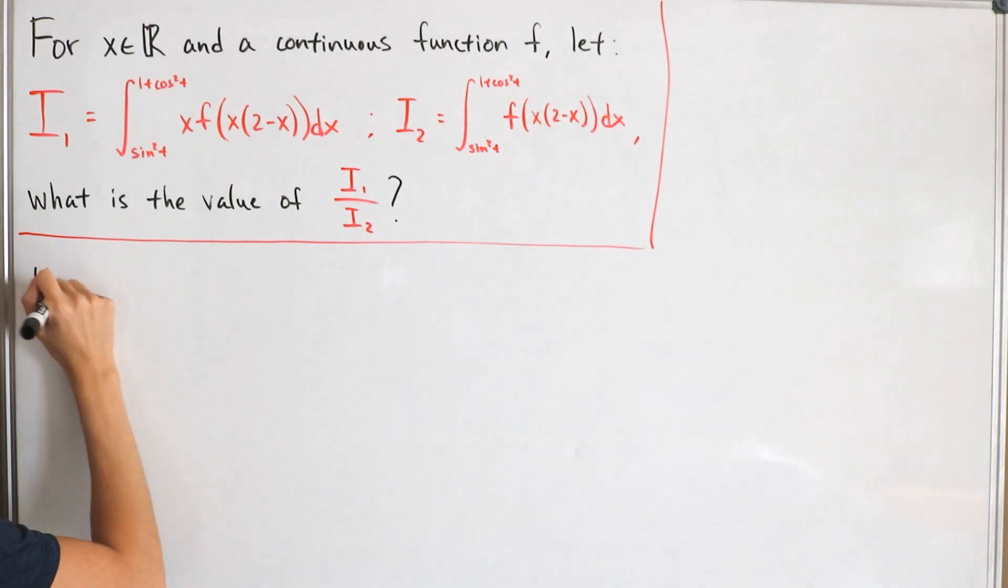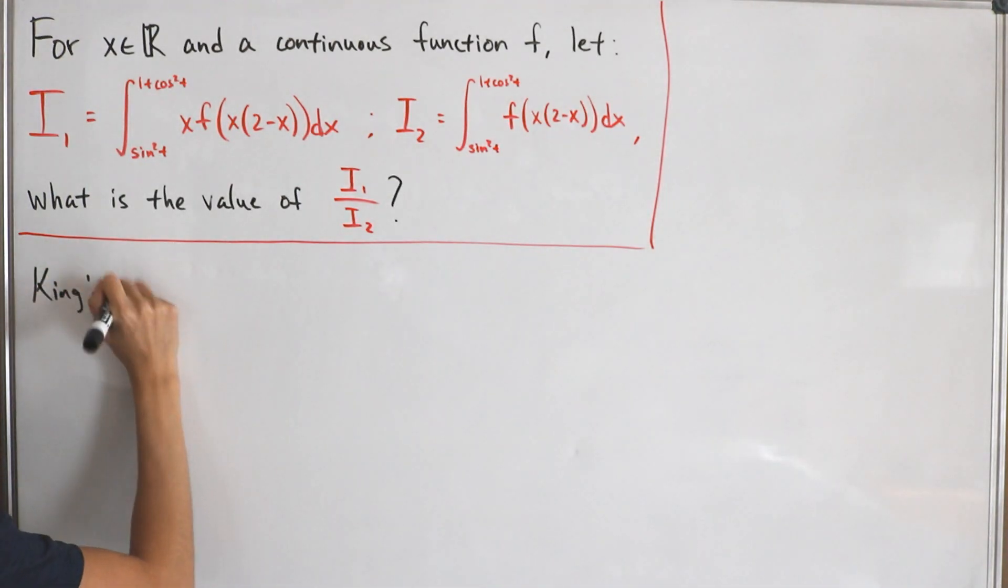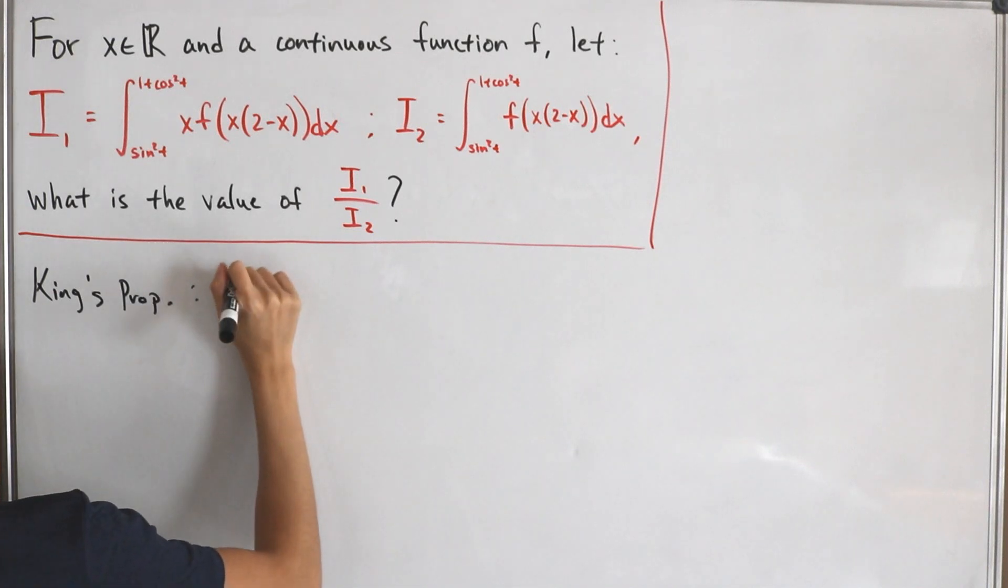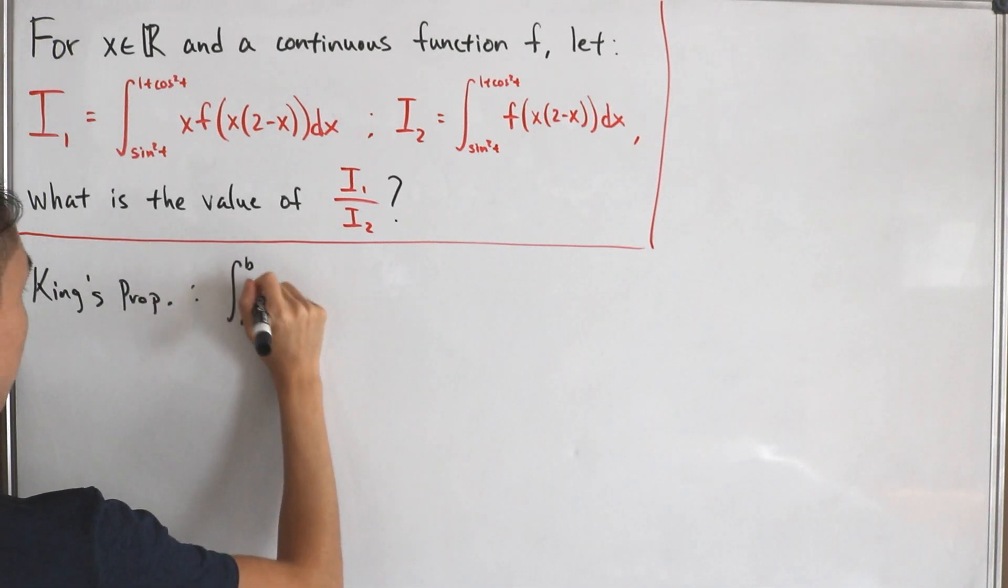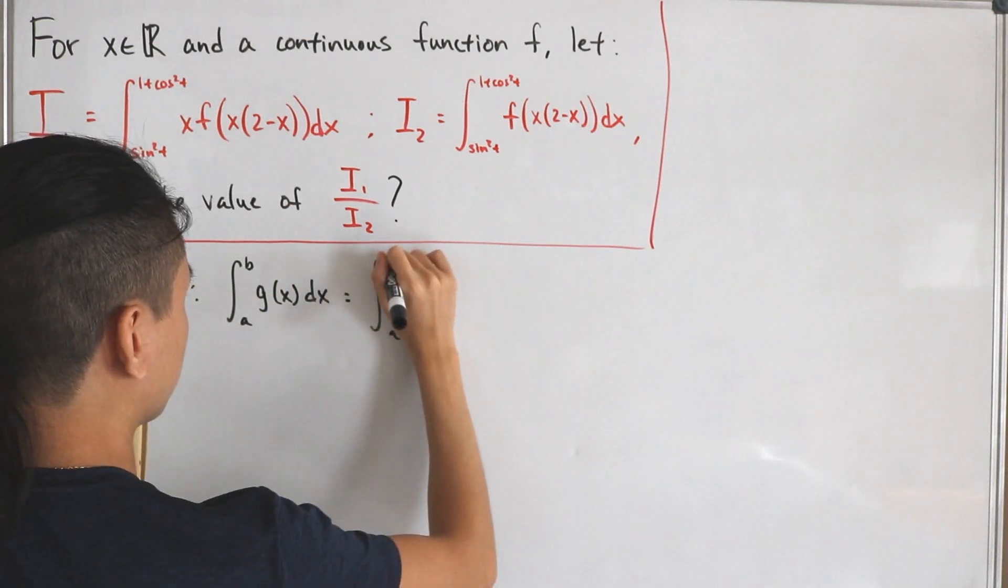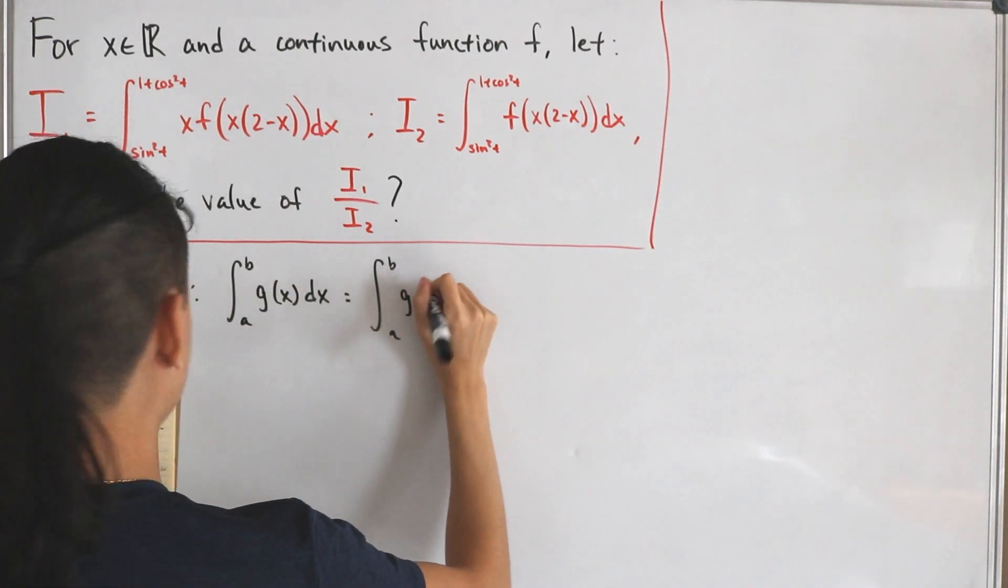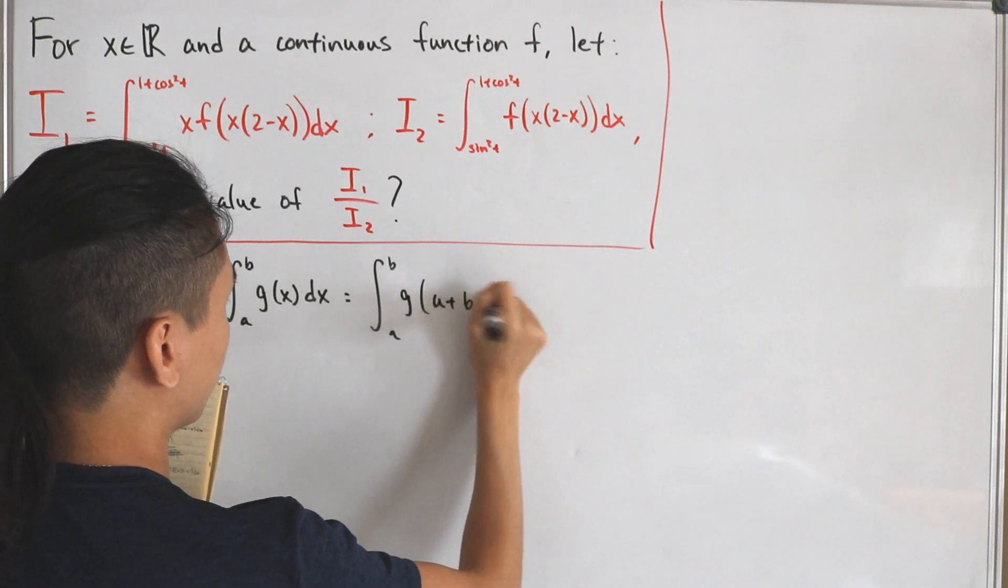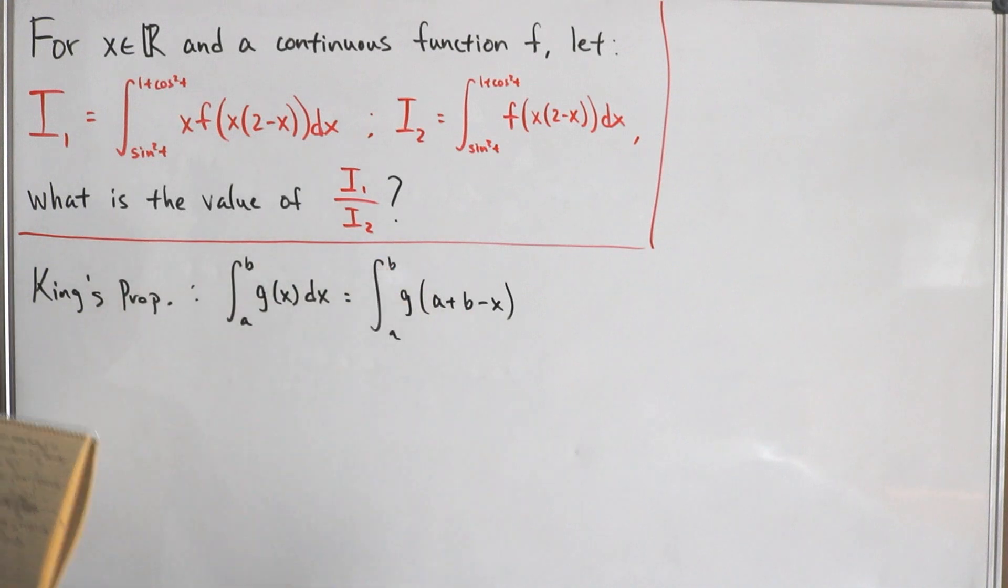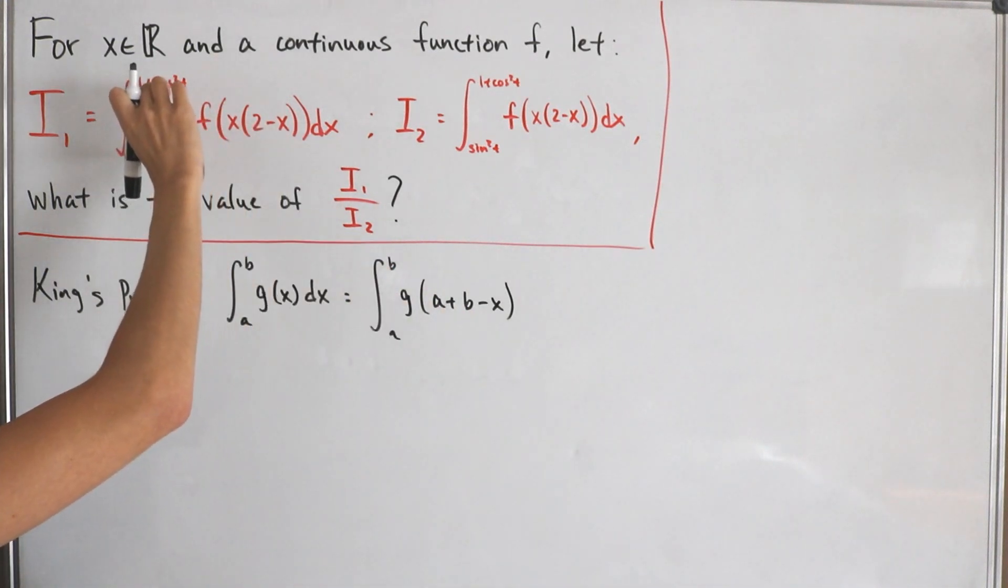So as King's property states, let me write this in short: the integral from a to b of some function g of x dx is equal to the integral from a to b of g of a plus b minus x.